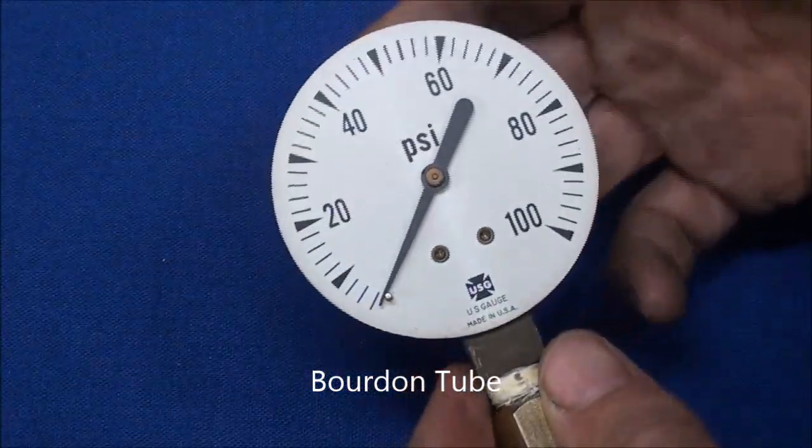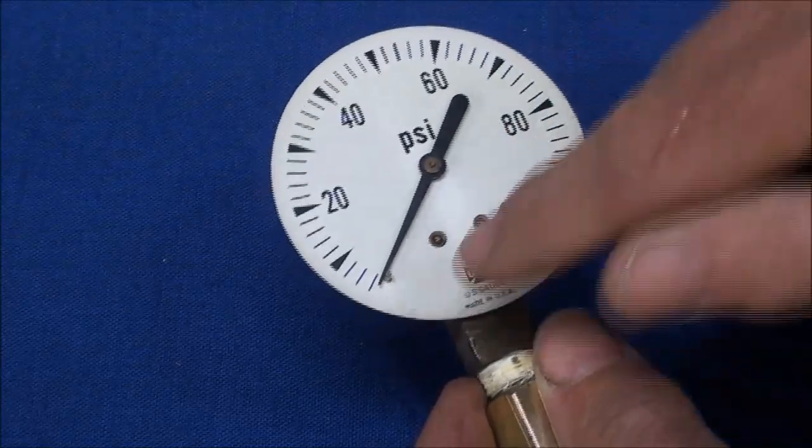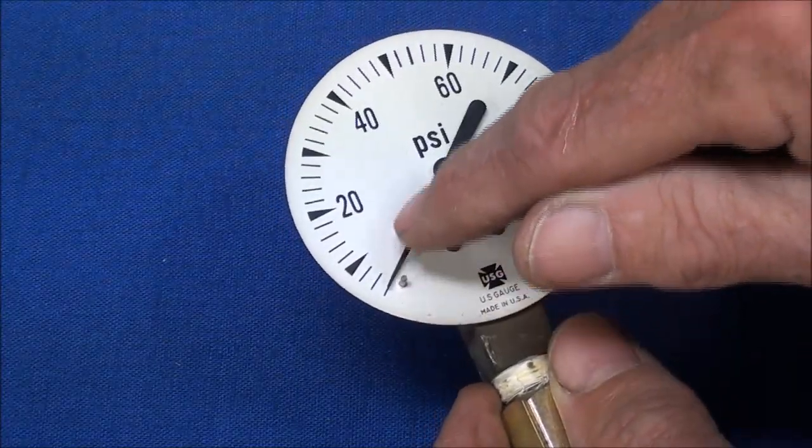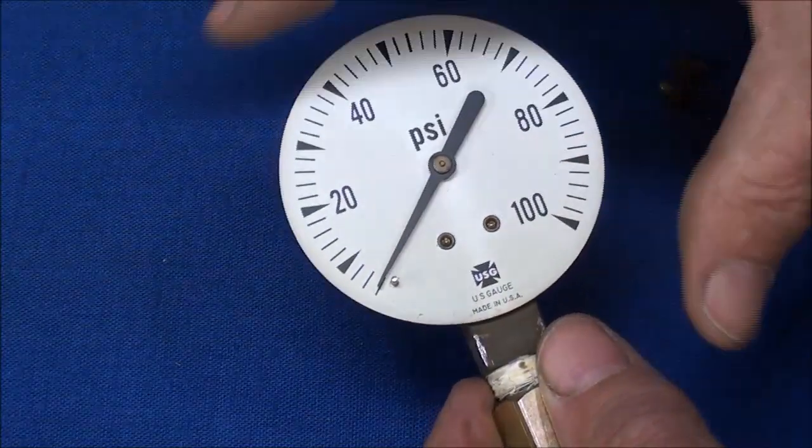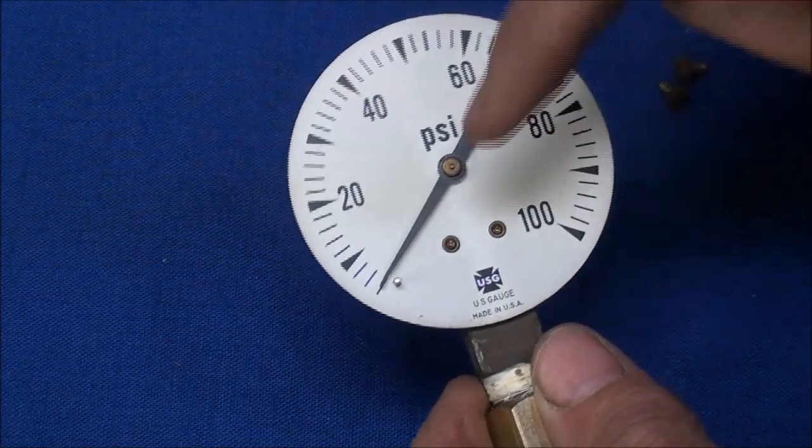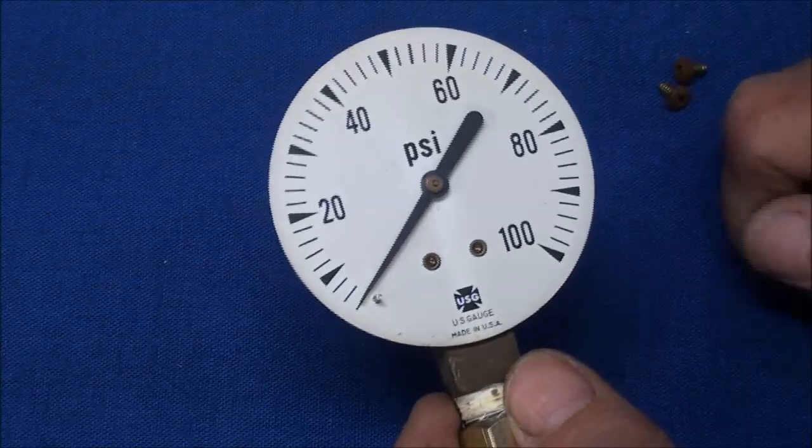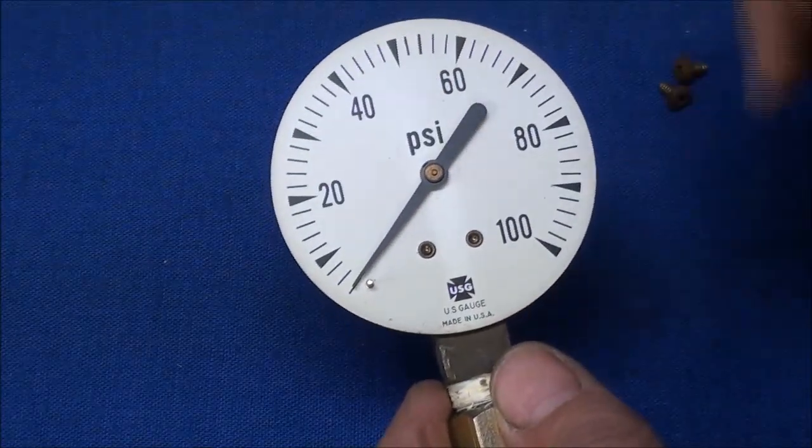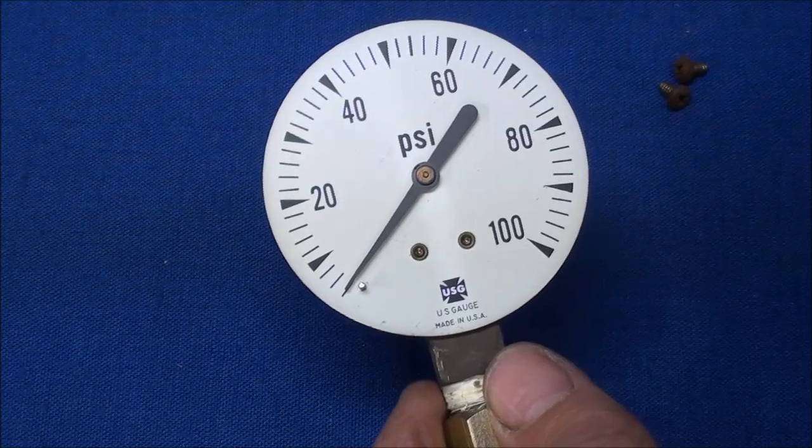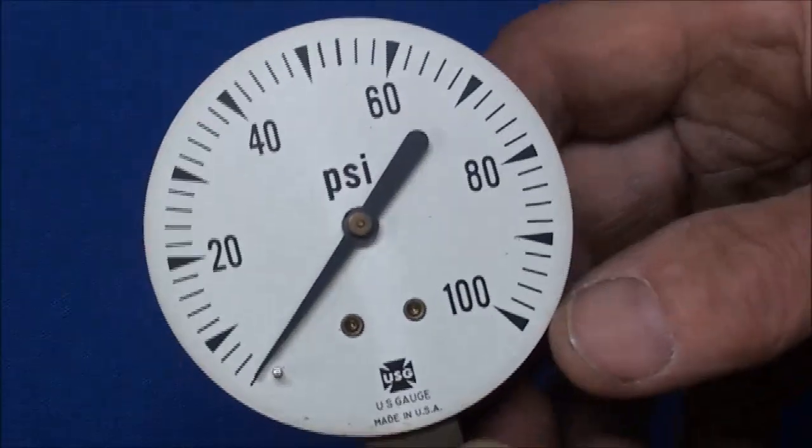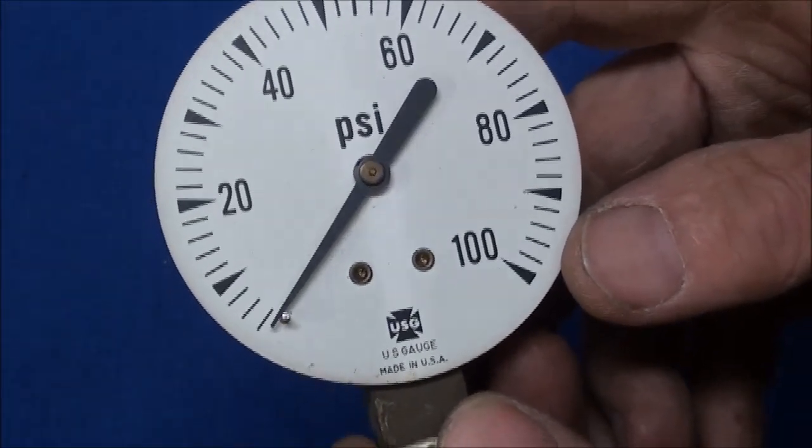And on the front, of course, there's a needle, and it's been calibrated with a little stop peg there, and the face. And this gauge goes from zero to a hundred psi, pounds per square inch, and you can tell this is kind of an old one, because the newer ones are also going to tell the pressure in metric, which is kilopascals.